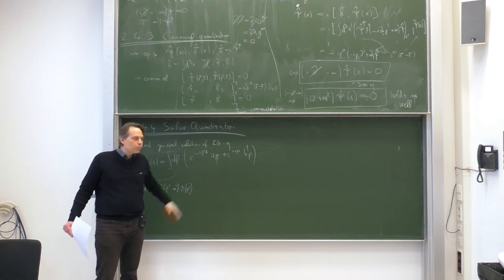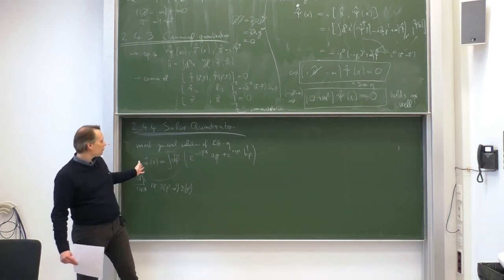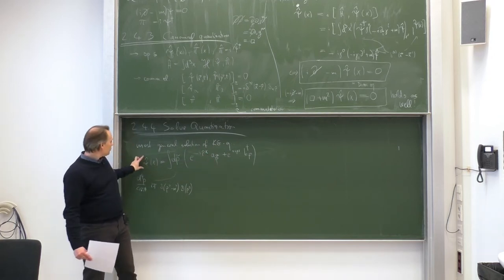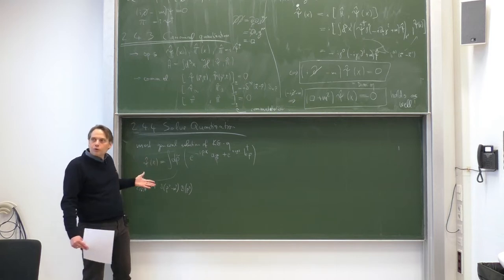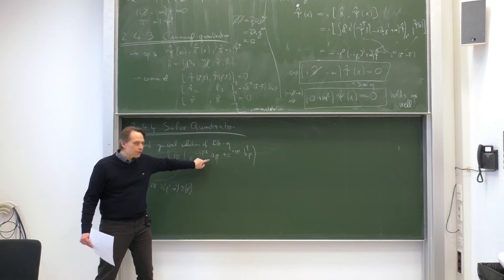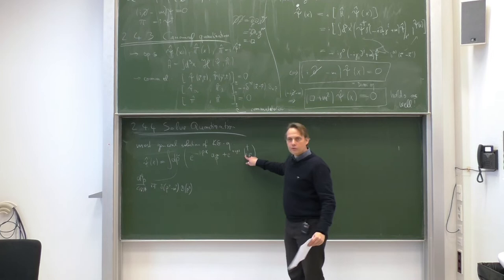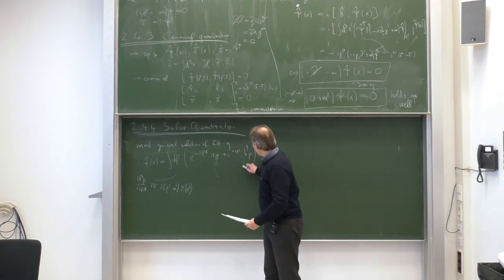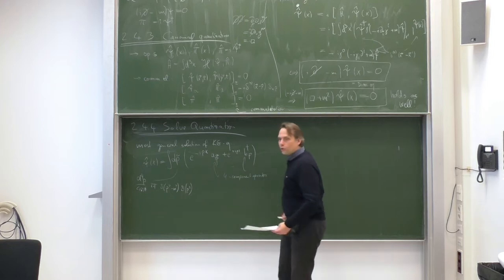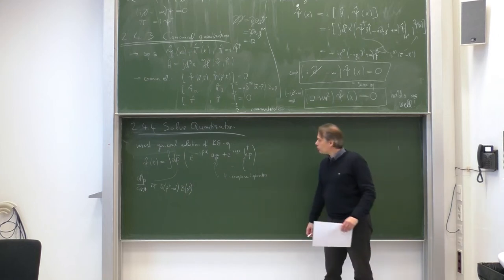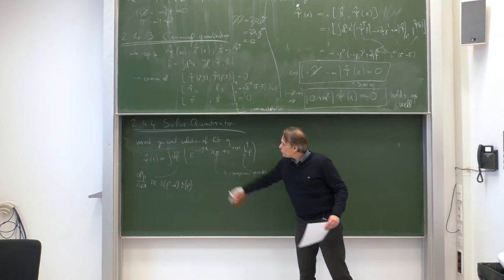At this point a and b are completely arbitrary Fourier components. They are operator-valued because psi on the left-hand side is an operator. Furthermore, psi is a spinor with four components, so really we have four entries each of which is an operator. Therefore a must also be a four-component operator — an operator-valued spinor — and similarly for b.